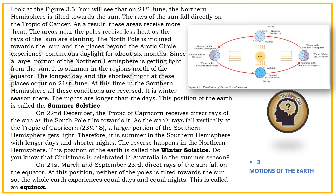On the 22nd of December, the Tropic of Capricorn receives direct rays of the Sun as the South Pole tilts towards it. As the Sun's rays fall vertically at the Tropic of Capricorn (23.5 degrees S), a larger portion of the Southern Hemisphere gets light. Therefore, it is summer in the Southern Hemisphere with longer days and shorter nights. The reverse happens in the Northern Hemisphere. This position of the Earth is called the Winter Solstice.